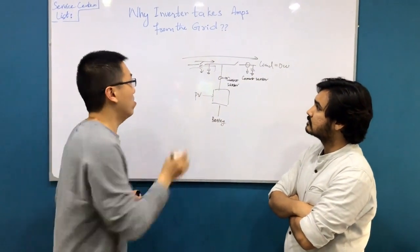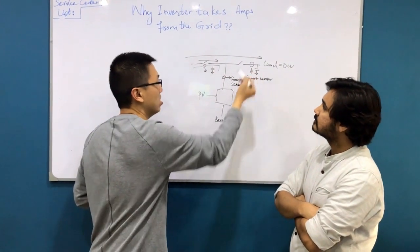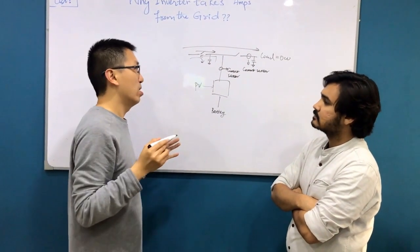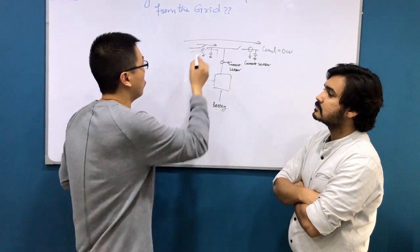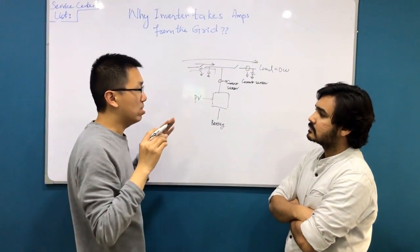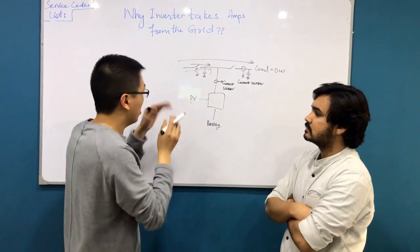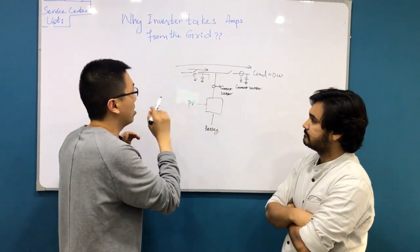But for inverter inside, we have some capacitors. Inside is the filter, maybe for the current and to make the current smooth.